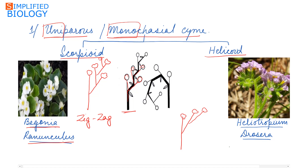In case of helicoid cyme, the main branch terminates with a flower. From the main branch develops a lateral branch that terminates by a flower. From that lateral branch develops another lateral branch on the same side, which also terminates by a flower, and so on. In helicoid cyme, branches develop on the same side.